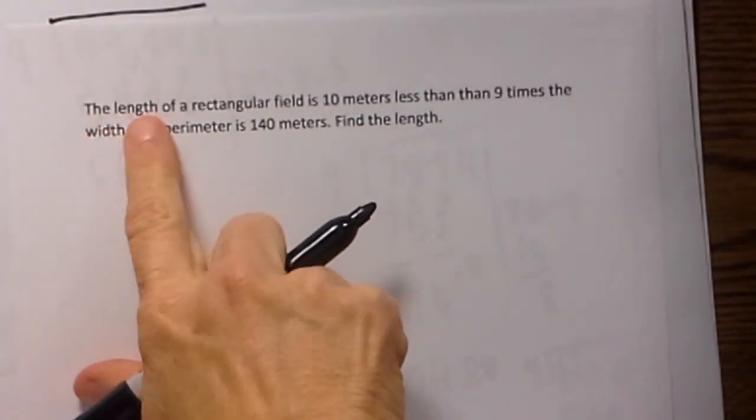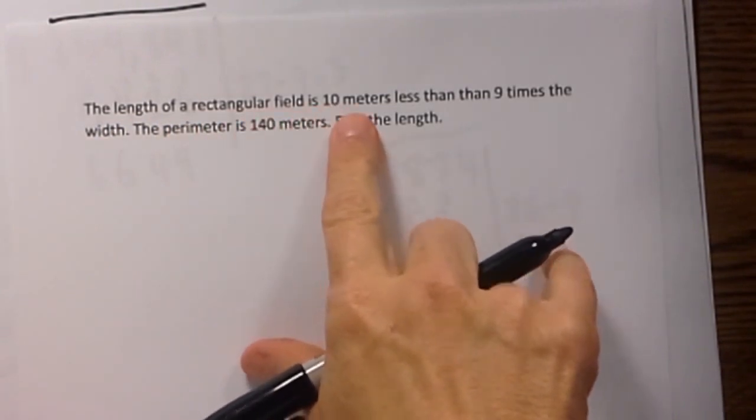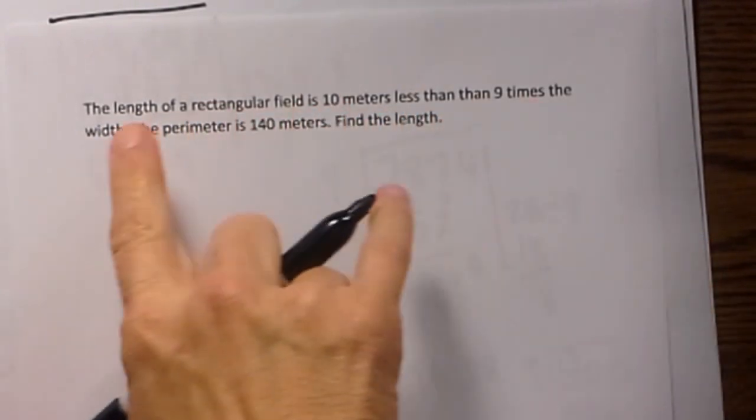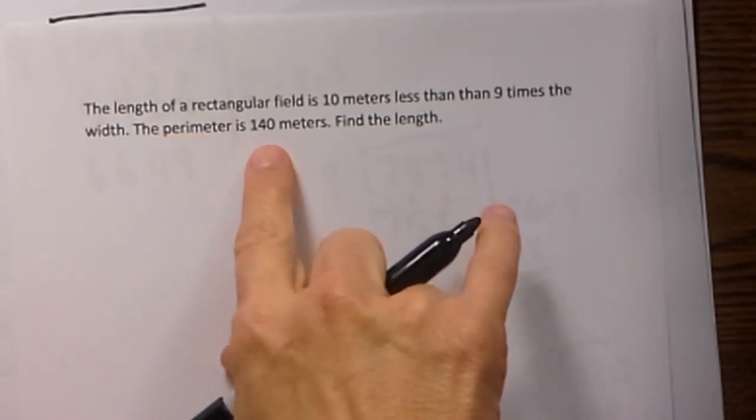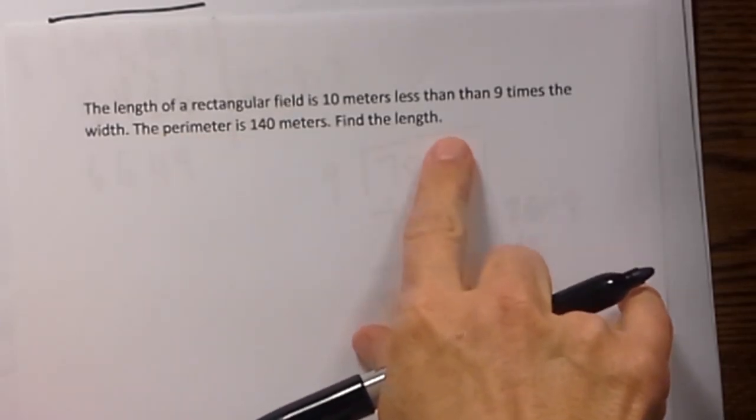Here is the first one. The length of a rectangular field is 10 meters less than 9 times the width. The perimeter is 140 meters. Find the length.